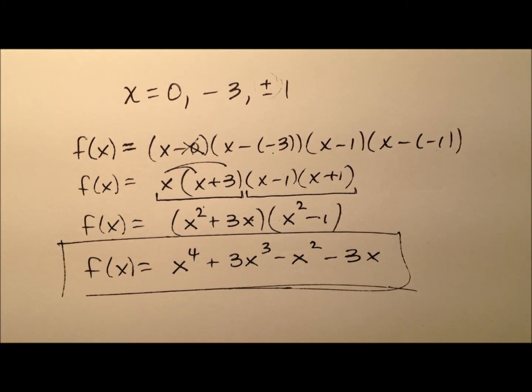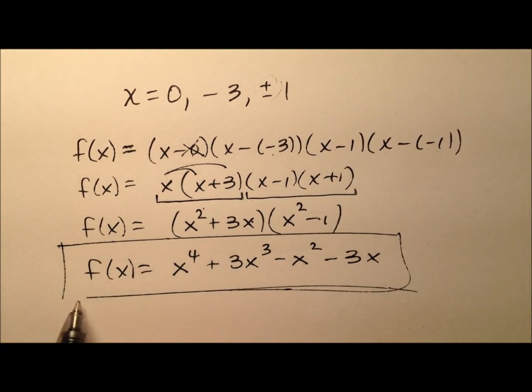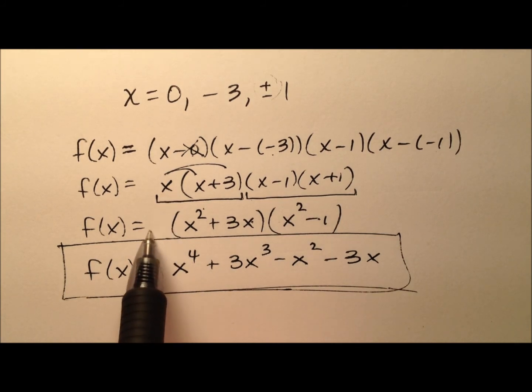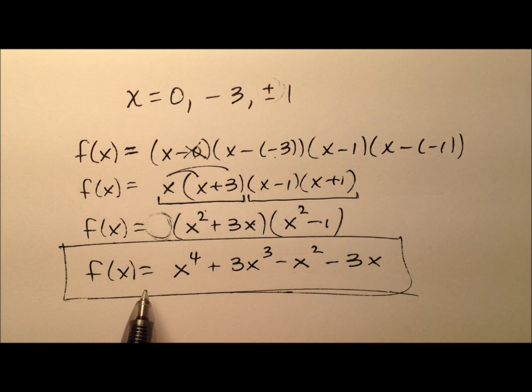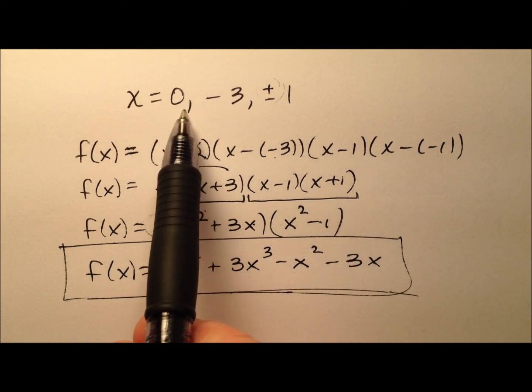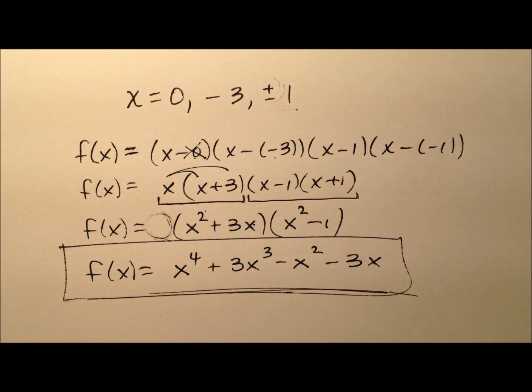So here is the simplest polynomial function possible, and simplest just means I've not multiplied it by any kind of coefficient out front, so we've just strictly multiplied the roots through. And so given these four roots, here's my simple polynomial function, and it's written in standard form.